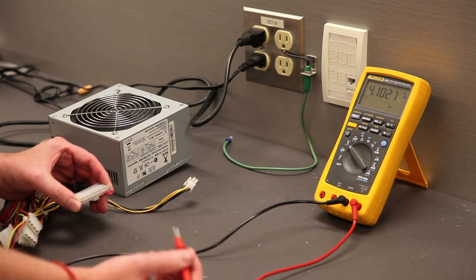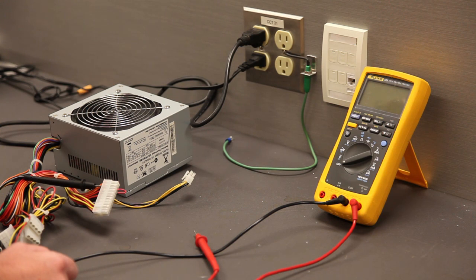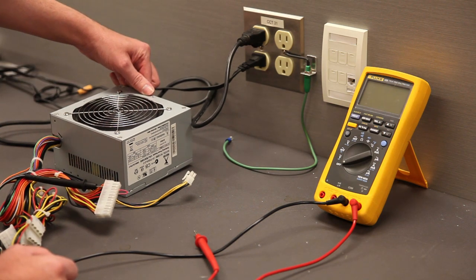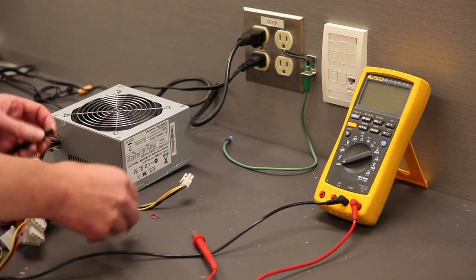Once you've finished taking all of your measurements, turn the multimeter back to the off position. Turn the main switch on the power supply off. Disconnect all of your connections and reinstall the power supply into your case.